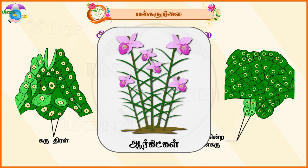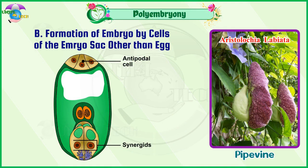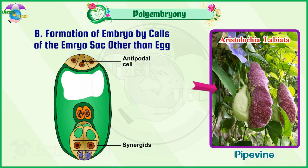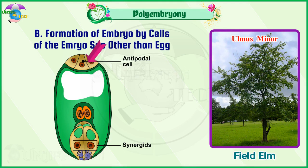Category B: Formation of embryo by cells of the embryo sac other than the egg. Example from synergids: Aristolochia.